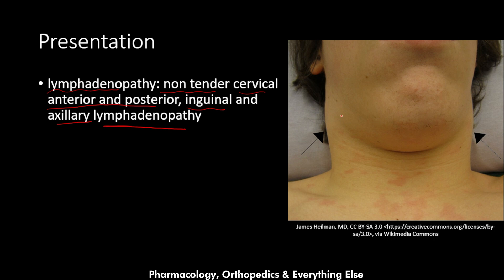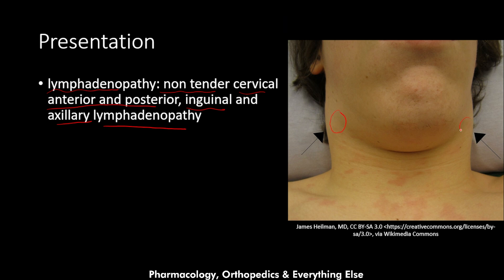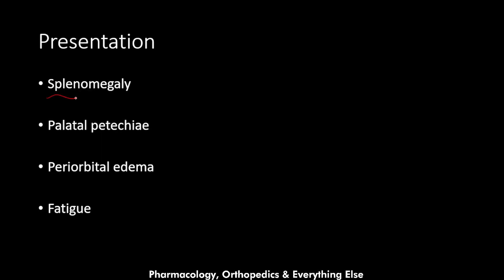Here is an example of axillary lymphadenopathy as you can see. Mono also presents with splenomegaly, palatal petechiae, and periorbital edema, and it is always associated with fatigue.